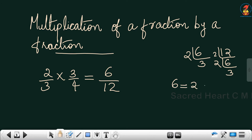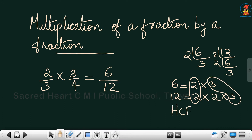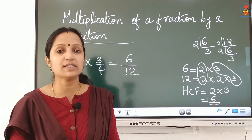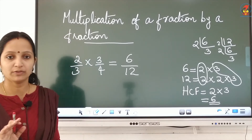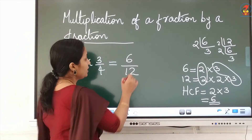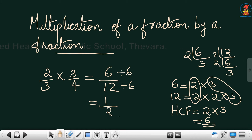For example: 6 equals 2 into 3, and 12 equals 2 into 2 into 3. Group the common numbers — the HCF is 6. So 6 divided by 6 equals 1, and 12 divided by 6 equals 2. The answer in lowest term is 1 by 2. Always express the fraction in its lowest term.